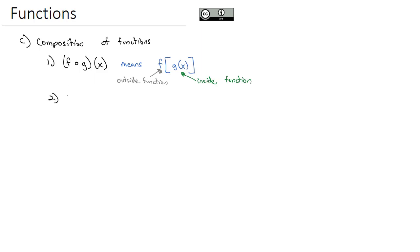Let's take a look at an example of what that means exactly. Let's say we're working with the function f of x equals 3x minus 2, and g of x equals x squared plus 4x.